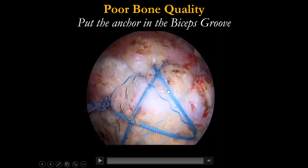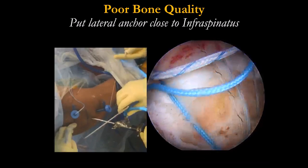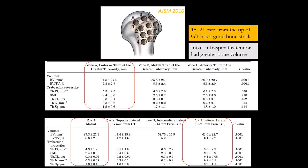This is our construct — even in patients with severe osteoporosis, we still get good results. Another anchor is placed close to the infraspinatus insertion — very front and very back. These two areas have the best bone quality based on our study.